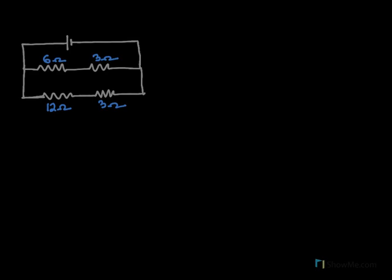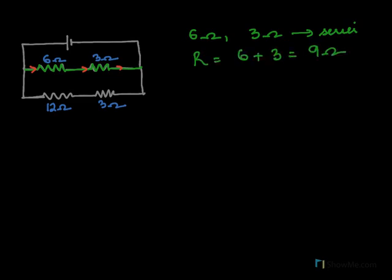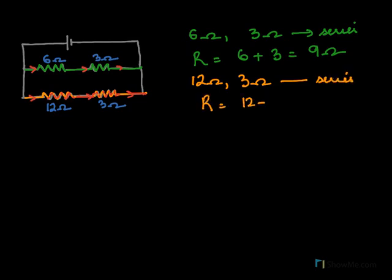To find the effective resistance of the next circuit, we examine the components. The same current passing through 6 ohms then passes through 3 ohms, so 6 ohms and 3 ohms are connected in series; their combined resistance is 6 plus 3 equals 9 ohms. Similarly, the same current flows through 12 ohms and then through 3 ohms, so 12 ohms and 3 ohms are also in series; their combined resistance is 12 plus 3 equals 15 ohms.